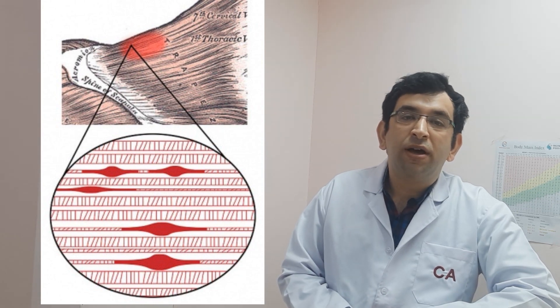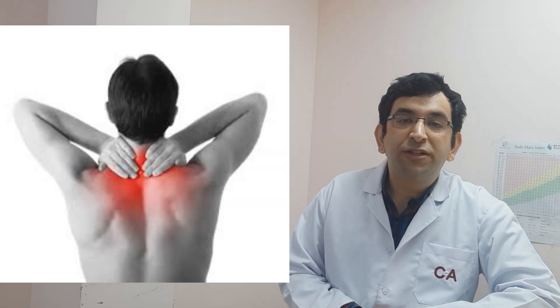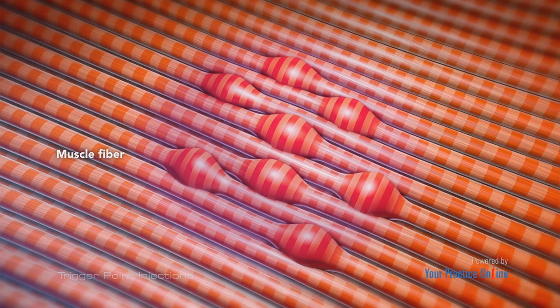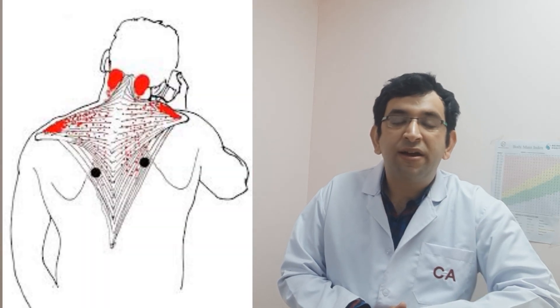Whatever's wrong, you can count on trigger points to make it worse, and in many cases they actually begin to overshadow the original problem itself. Trigger points, or muscle knots, are sore spots in soft tissue structures that can cause deep aching pains. These microscopic changes occur in muscle fibers, causing them to contract and shorten.